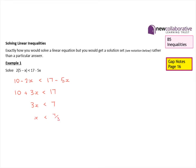We can write the solution set in three different ways. We can use inequality notation, and we can use what we call set notation. If we write this in set notation we need curly brackets, and we say that the solution set is values of X such that X is less than seven over three.